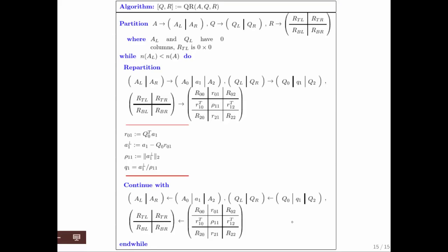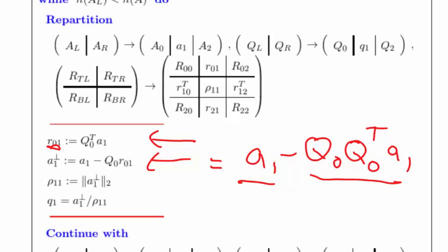So if we put that all together into an algorithm, we get this right here. Here are the steps. Compute all of the scalars that we encountered in the Gram-Schmidt process in one go as a matrix vector multiply. Compute the component of A1 orthogonal to the columns of Q0. Notice that this right here is equal to A1 minus Q0 R01. And if we now plug in what R01 is, we get Q0 transpose A1. And this is exactly the component of A1 in the column space of Q0. And subtracting that off then leaves us with the component that's orthogonal to that. Then we compute the length and we divide by the length. And in the process, little by little, we compute the columns of Q and the columns of R.